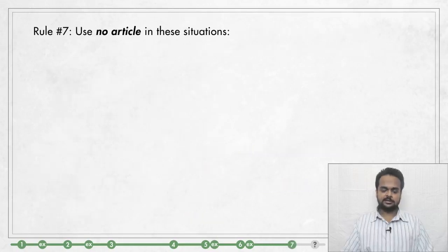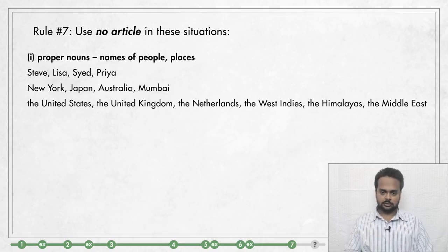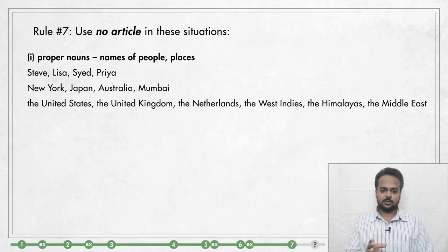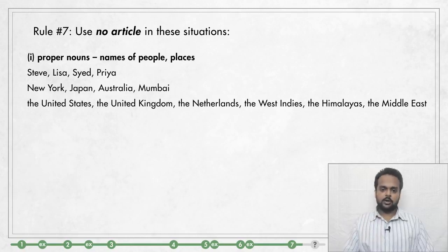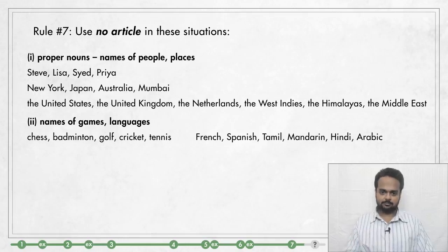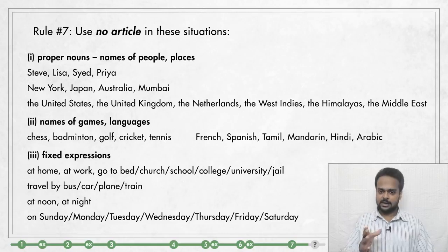Let's now talk about rule number seven: where to use no article. This is very important and a common place for mistakes, because there are many situations where you should not use an article. In a separate lesson we will focus on all of these situations, but here's a short list. We use no article in front of proper nouns — names of people or places. We don't say a Steve or the Priya. It's the same for places, however some place names have THE as part of the name, such as the United States, the United Kingdom — with these you must use THE. We also usually use no article with names of games and languages. And there are many fixed expressions that have no article — it's a good idea to memorize as many of these as possible.